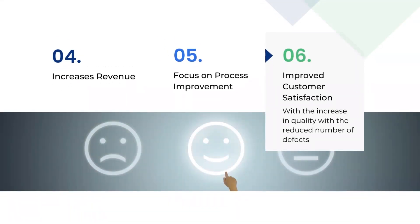The sixth advantage is improved customer satisfaction. Customer satisfaction is improved with Six Sigma implementation in manufacturing processes. With the increase in quality and the reduced number of defects, satisfaction among customers is also increased. It is a proactive approach rather than reacting after hearing back from customers. The number of complaints regarding the products will reduce once Six Sigma is implemented in manufacturing processes.